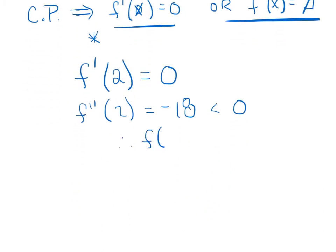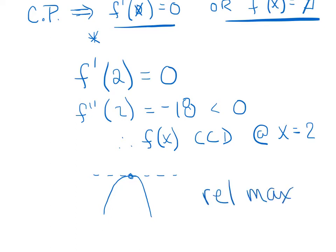Therefore, f is concave down at x equals 2. If you want a quick visual picture, here's what we've created. We know we're concave down. We know there's a horizontal tangent line. And therefore, the second derivative test guarantees the existence of a relative maximum at x equals 2.